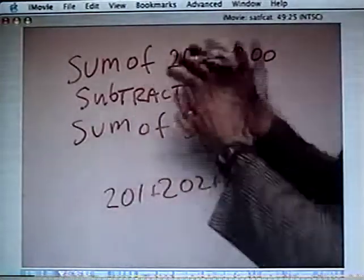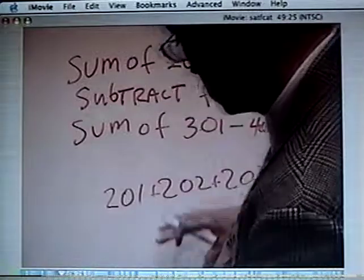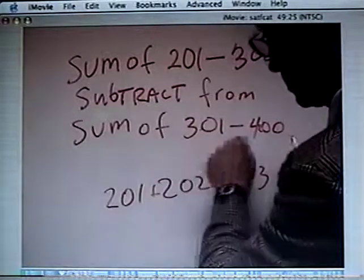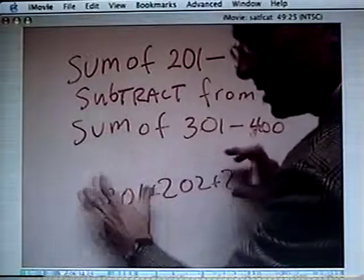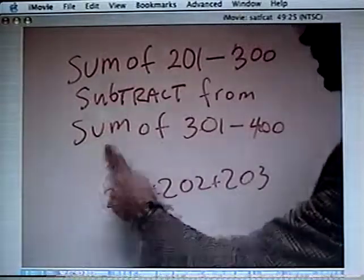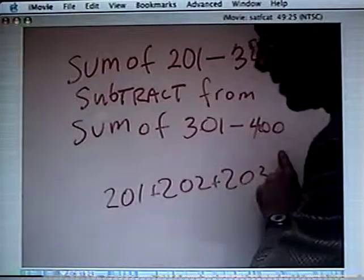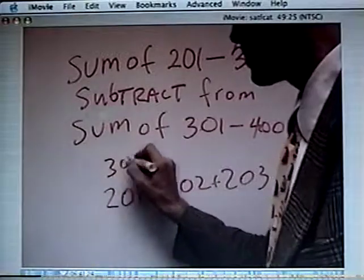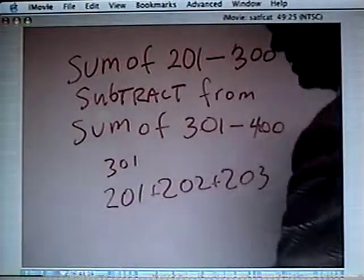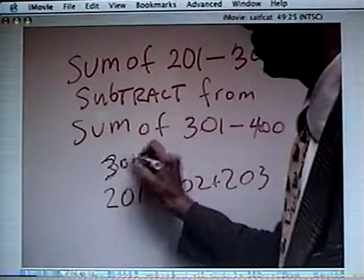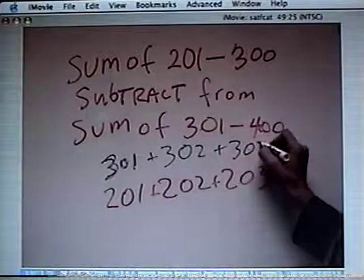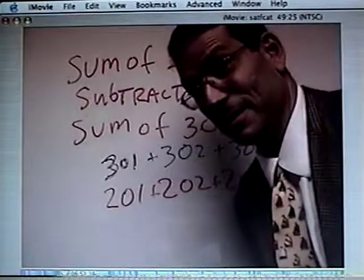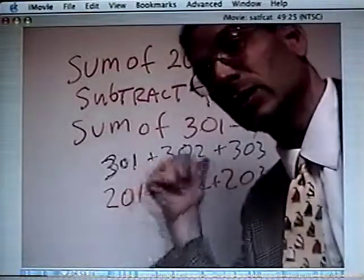We're going to subtract this amount. We're taking away this amount from the sum of 301 to 400. So that sum is the same race color. 301 plus 302 plus 303, right? Do you see a pattern here?